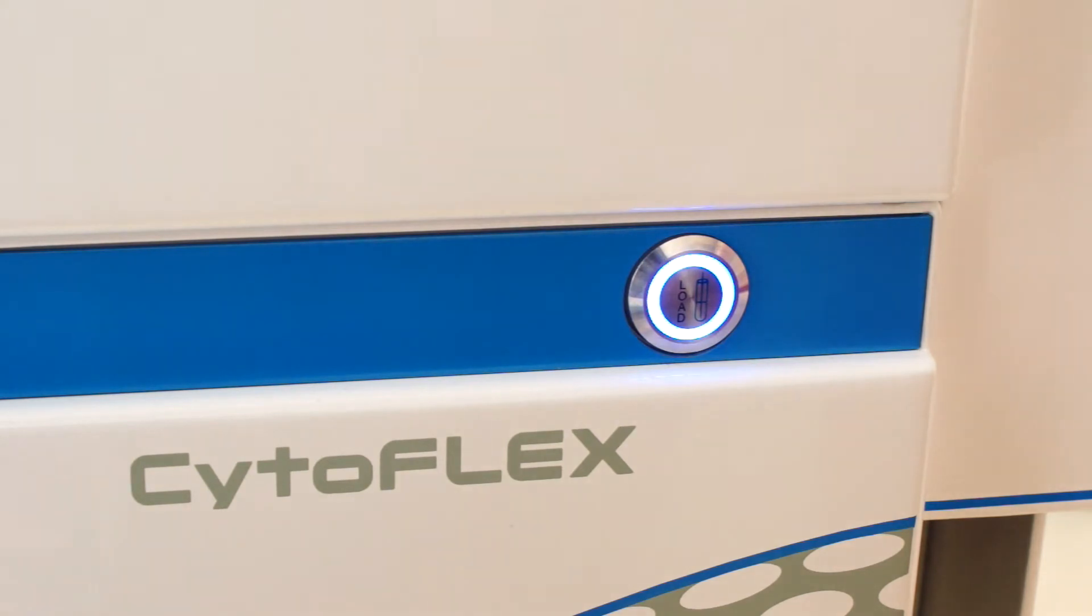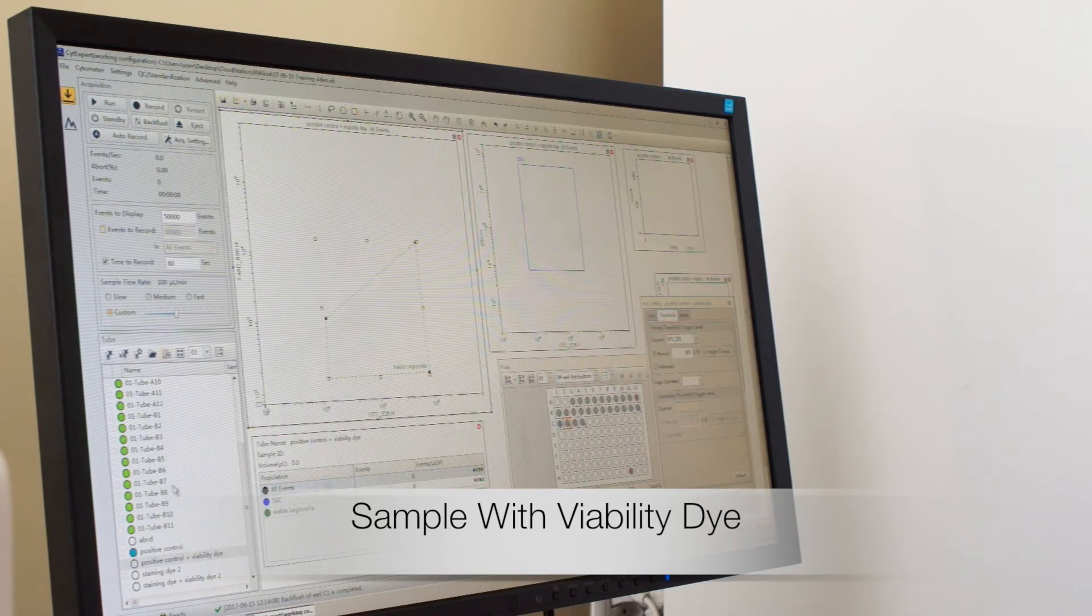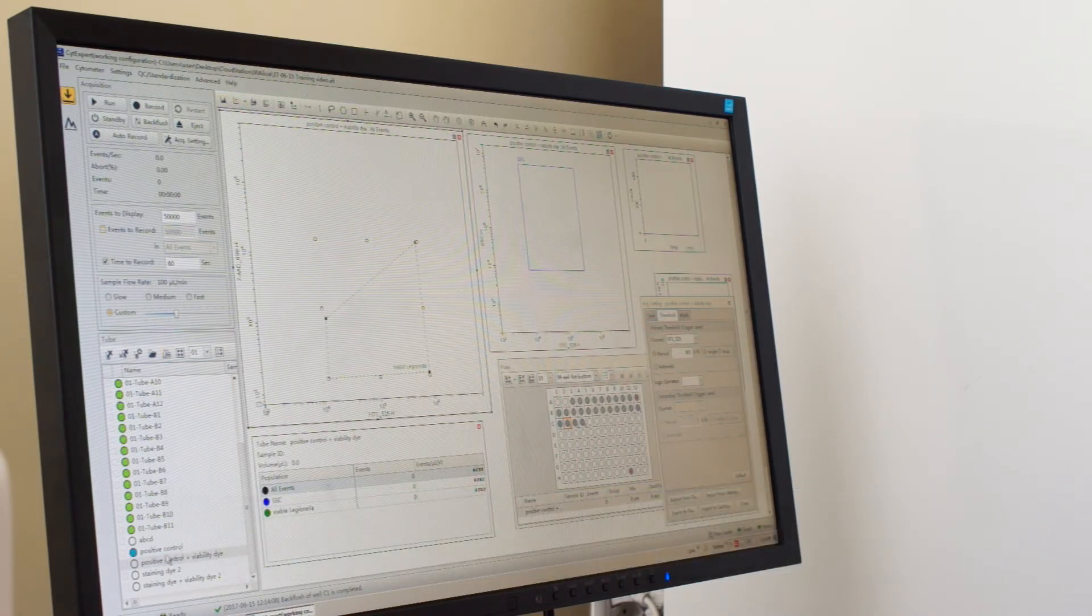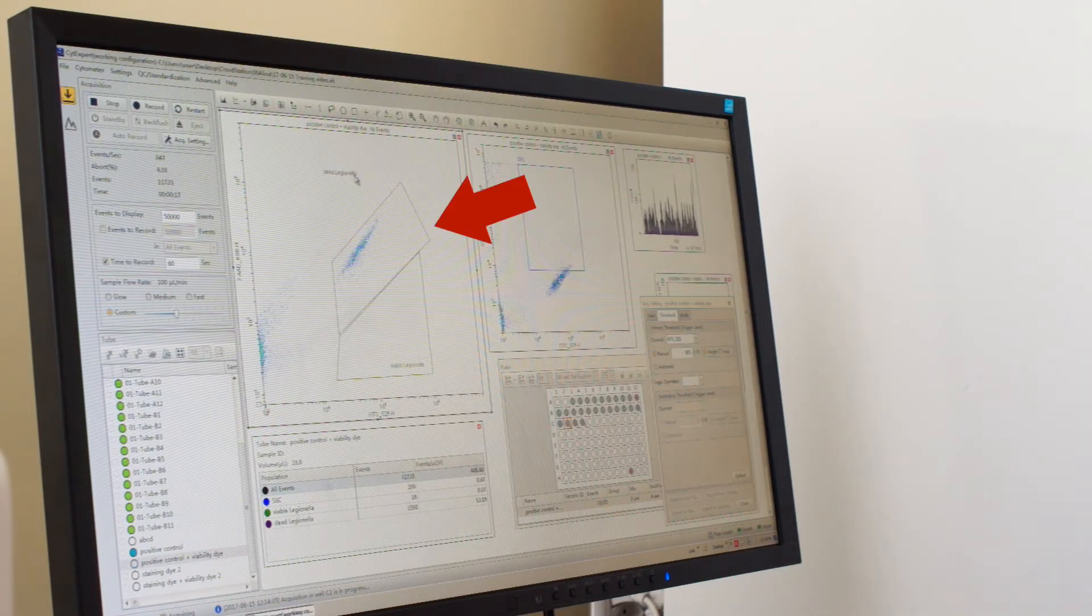Now I am looking at the sample that I additionally stained with the red viability dye. This red dye only stains dead cells. The viable fraction that is stained only green is here. The population of dead Legionella cells you can see here.